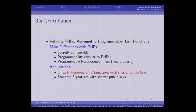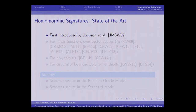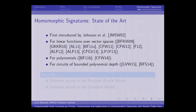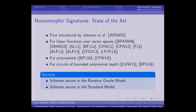Our first application is a linearly homomorphic signature scheme with shorter public keys. Before giving an intuition of our result, I'll recall some notions about homomorphic signatures. They were introduced by Johnson et al. in 2002. So far we have homomorphic signatures for linear functions over vector spaces, for polynomials, and for circuits of bounded polynomial depth, with security proven either in the random oracle model or the standard model.